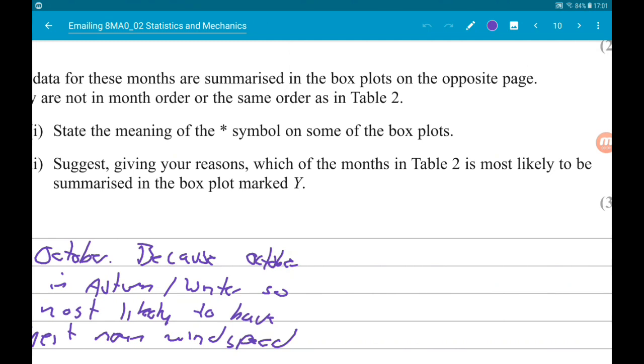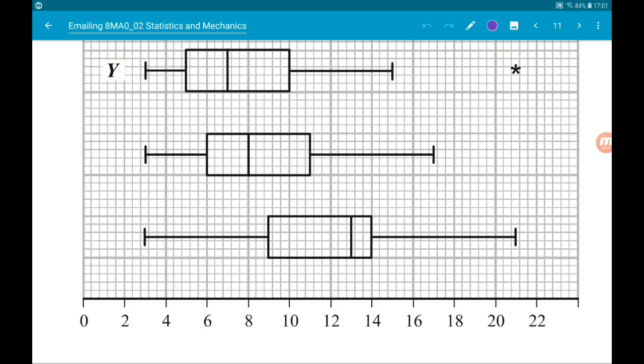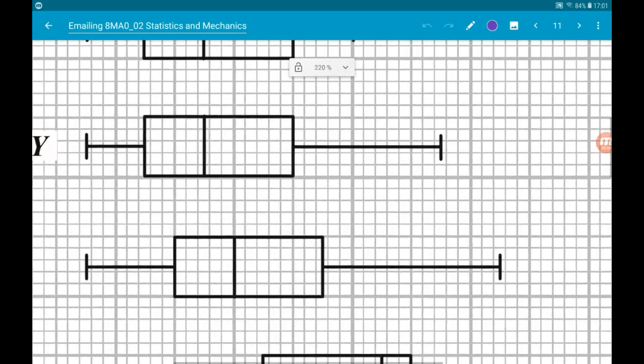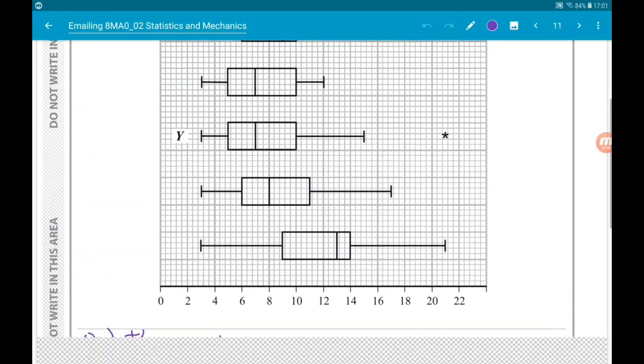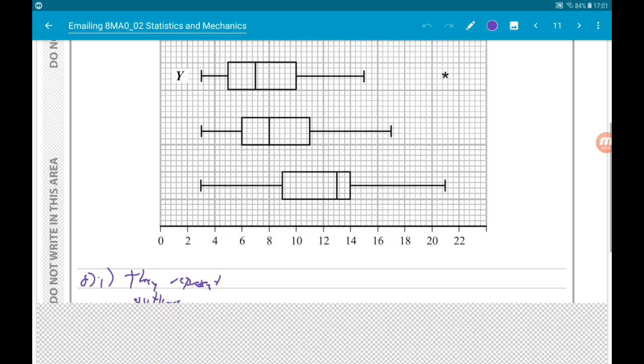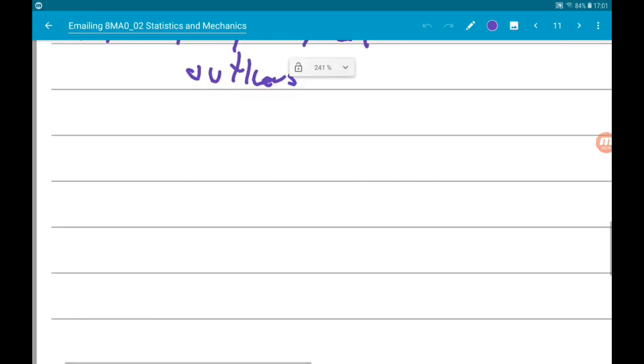Okay, then part 2 says suggest giving reasons which of the months in Table 2 is most likely to be summarized as the box plot marked Y. Okay, so let's have a look. So Y is this guy. Now we can see that it has the lowest median. So first of all then, let's say Y has the lowest median. Now that means that the mean is going to be fairly low.